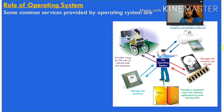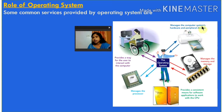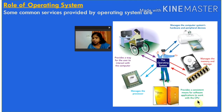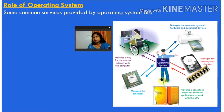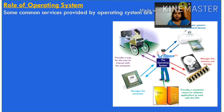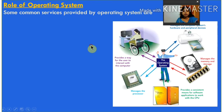The role of the operating system includes: it manages the computer system's hardware and peripheral devices, manages memory and storage devices, provides a consistent means for software applications to work with the CPU, manages the processor, and provides the way for users to interact with the computer. Without an operating system, no work can be done in a computer.